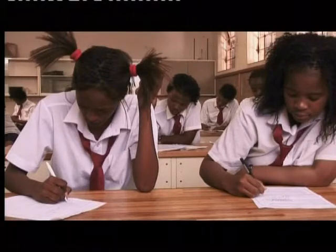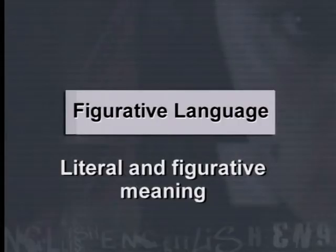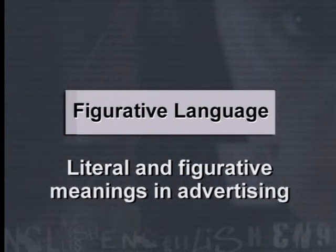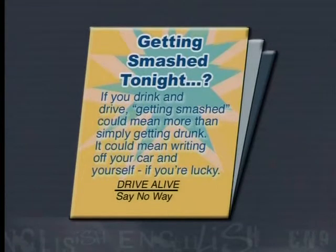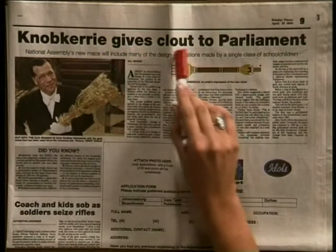Now let's have a more detailed look at the lessons in the series and how you can use them in your classroom. In the first two lessons, we differentiate between literal and figurative meanings, and we look for examples of these in advertising. By looking at examples taken from advertising, we show learners that they are surrounded by figurative language and use it all the time, even if they are not aware of the names of the figures of speech being used.